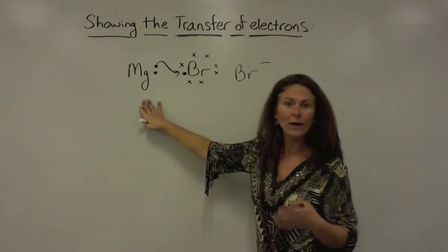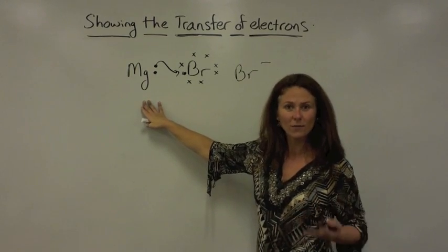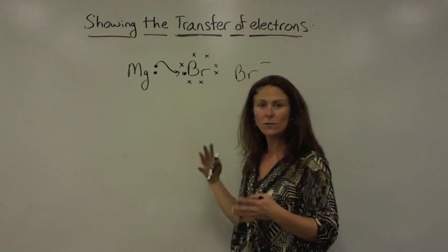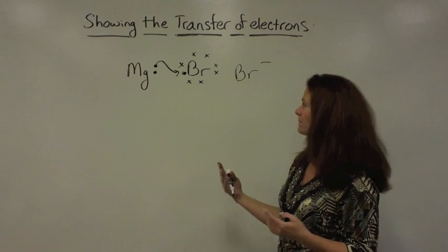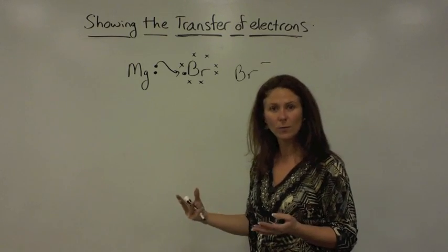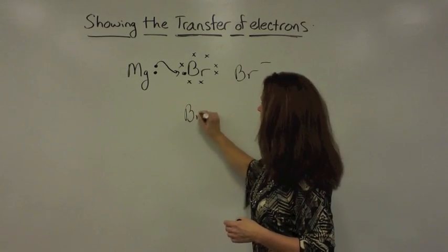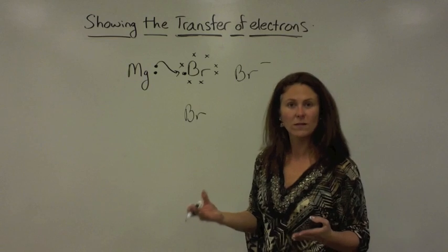Magnesium, however, is not quite happy yet because it still has one electron to get rid of. In order to find the proper ratio between magnesium and bromine, we're going to need another bromine atom, which would also start with seven valence electrons.